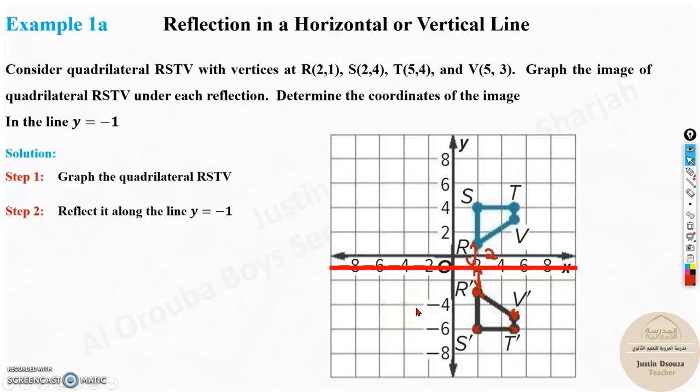Whenever you have reflected something, you will have to give the notations as R dash. R is reflected over here, so it's R dash. Then S dash, T dash, V dash. Please note the coordinates of the reflected image. R dash is (2,-3), S dash is (2,-6), T dash is (5,-6), and lastly V dash is (5,-5). That's the answer.